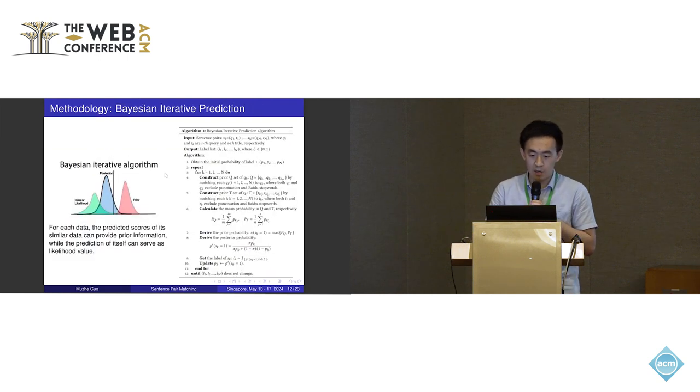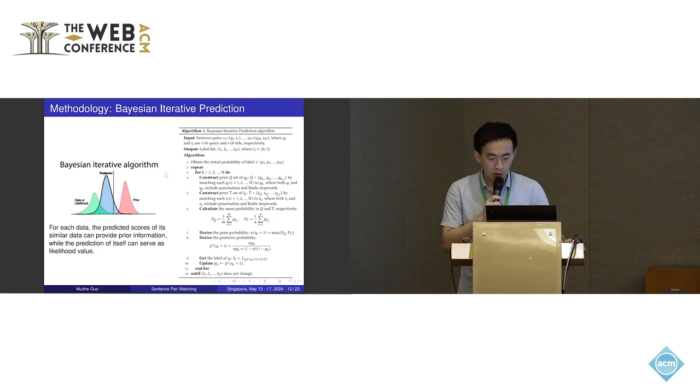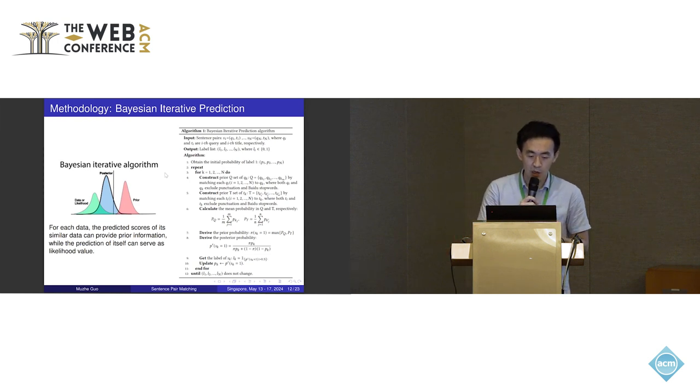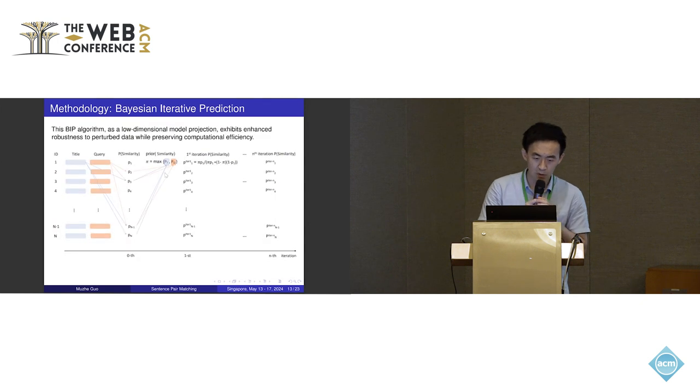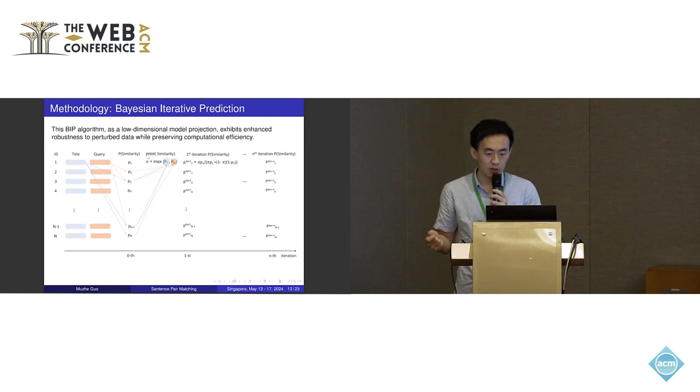The second method is called Bayesian iterative prediction. The idea behind this is very easy. For each data, the predicted score for similar data can provide prior information, and the prediction of itself can serve as the likelihood value. For example, if data number one is what we are interested in, the model will give a prediction score P1 for sentence pair number one. But we didn't use P1 to generate the prediction label directly.